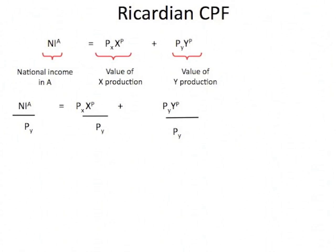So we can divide through by the price of Y across the equation, and then the price of Y will cancel out on the right-hand side. What we have here is an equation that can be used to depict national income on a graph.